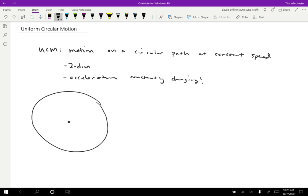Here's the circular path it's following. And at one point, the velocity may be in this direction, tangent to the circular path. And then at another point, the velocity may be like this. Same speed, but a different direction.